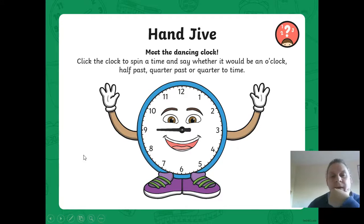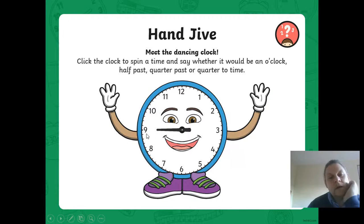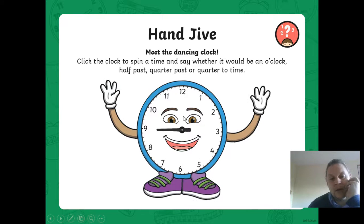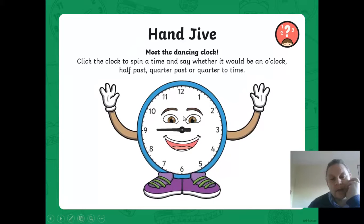Now we've got the hour hand pointing directly to the nine. So what's that going to be? If the hour hand's pointing directly to the nine, is it going to be quarter-past, quarter-to, or half-past? Now, if it's pointing directly to the nine, it's going to be o'clock. I'm hoping to see the big hand come up here. Nine o'clock.